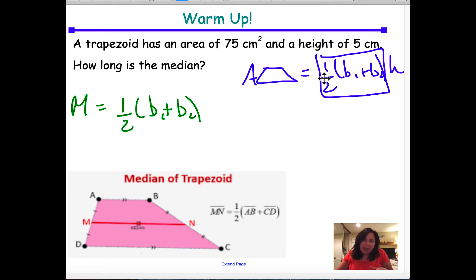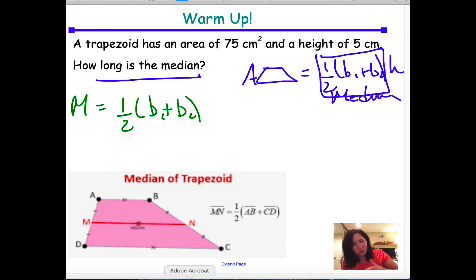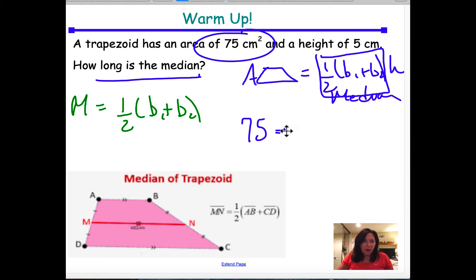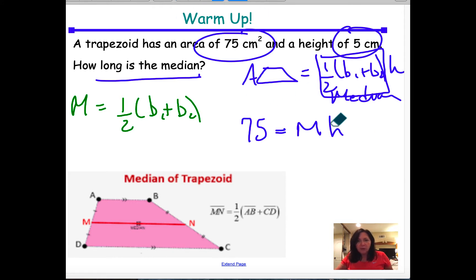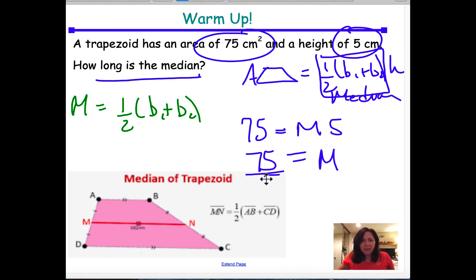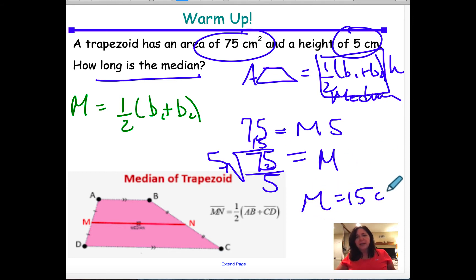My question is: how long is the median? I'm going to plug all my information into this equation and divide it out to get the median length. We know the area is 75 centimeters squared, so: 75 equals one-half times (base 1 plus base 2), which I'll just call the median, times the height h. I know the height is 5 centimeters, so I replace h with 5. Dividing both sides by 5, I get the median equals 75 divided by 5, which is 15 centimeters.